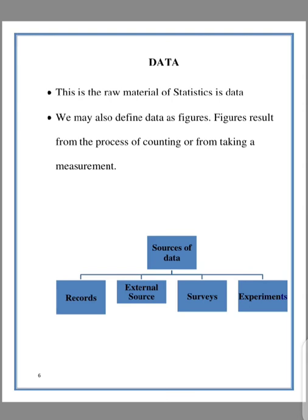Now we've been talking about the word data. So what is data? Data is information, data is a raw fact. Data is the raw material for statistics, which means without data there won't be any statistics. We may also define data as figures, and figures result from the process of counting or taking measurements. There are various sorts of data, which include records — mostly records kept in hospitals, records in banks, records in schools, records in gene banks. Or it could be external, meaning someone has already asked that question, made a publication, and you correlate particular answers to what you want. And surveys — basically using questionnaires or schedules — or experimentation, when you are controlling certain variables to see how they respond.